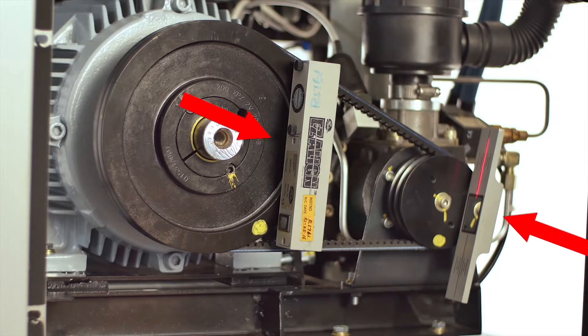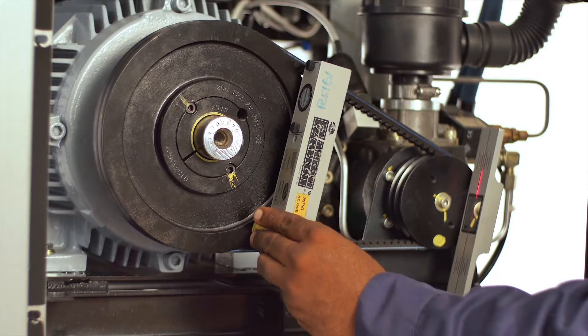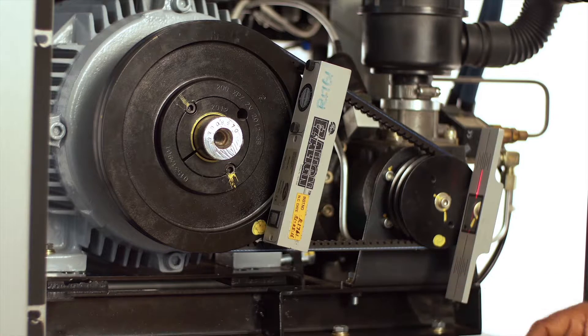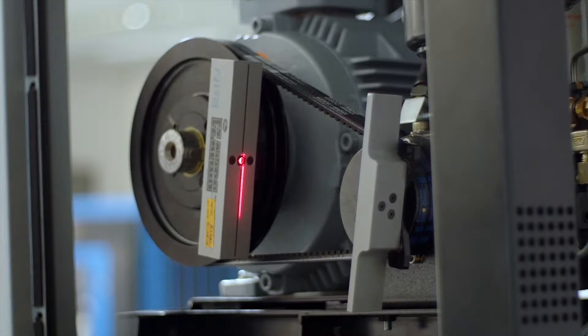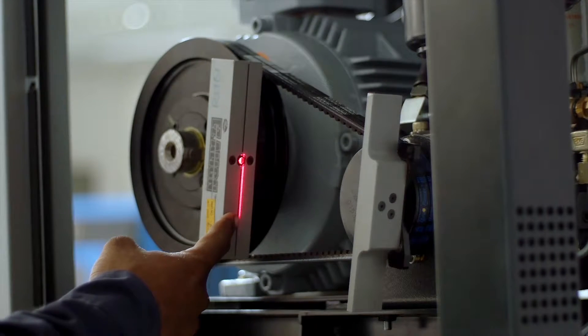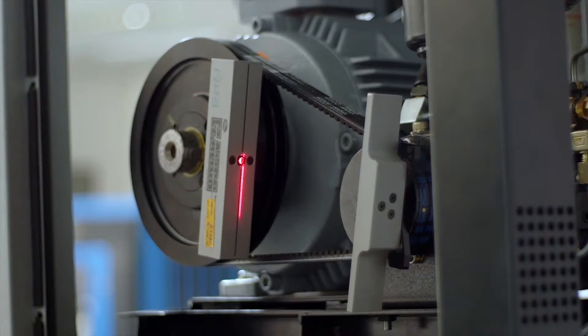Fix the belt alignment meter on the pulley as indicated and ensure the laser marks are matching with the center line. If not, realign the pulleys to match.